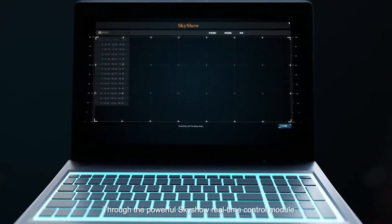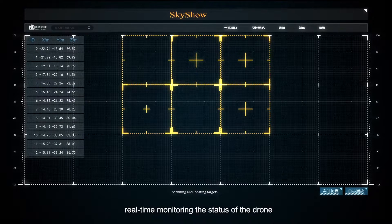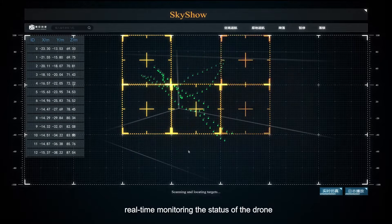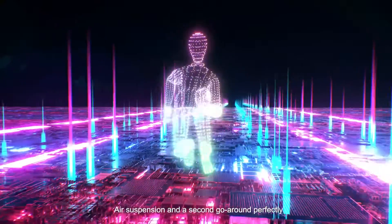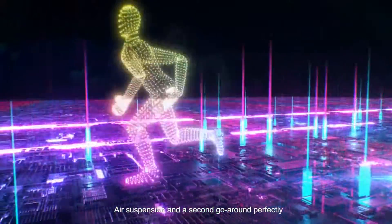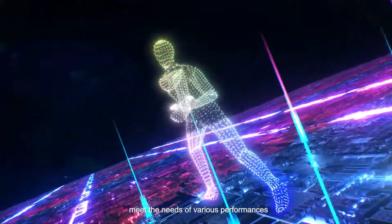SkyShow real-time control module monitors the status of the drones in real-time, bringing a new change to the drone performance mode. Air suspension and the second go-round perfectly meet the needs of various performances.